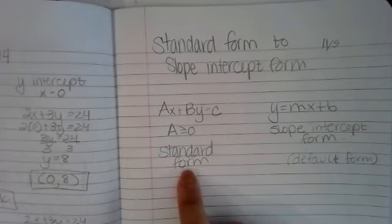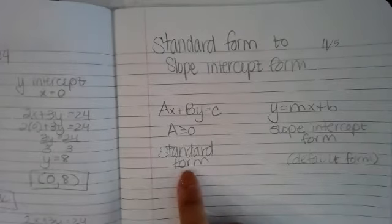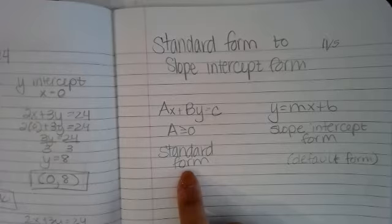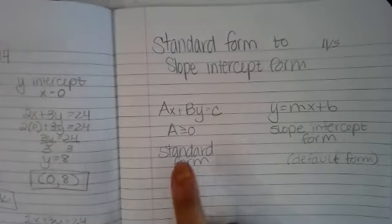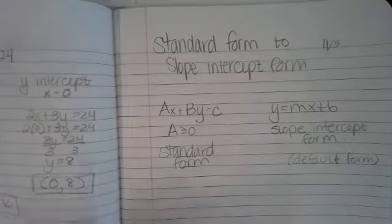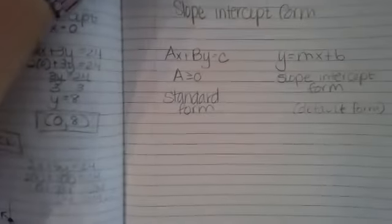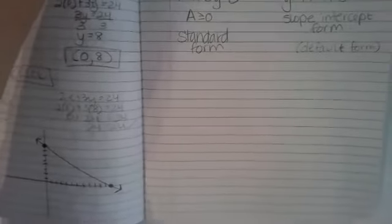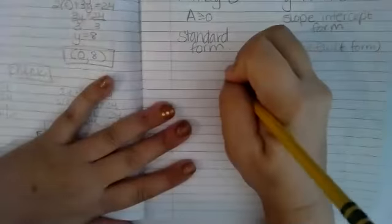We know how to graph in slope intercept form — that's pretty straightforward and we've reviewed it a lot. When we are in standard form, the way to graph is to calculate out the intercepts. Sometimes that's a lot of extra work, so in those situations we can convert standard form to slope intercept form for an easier time graphing.